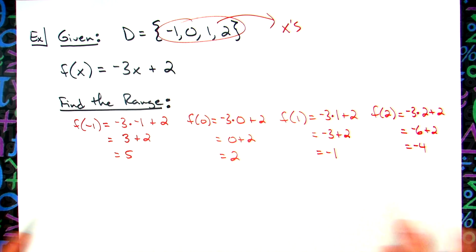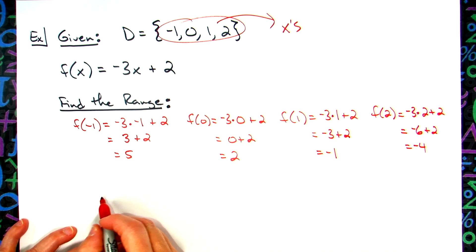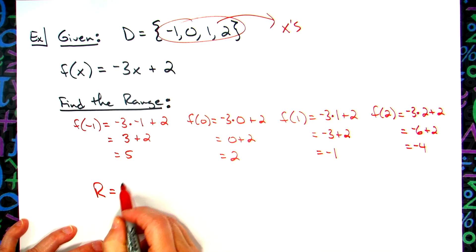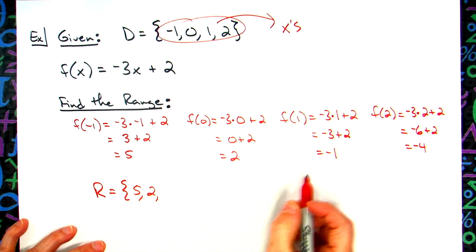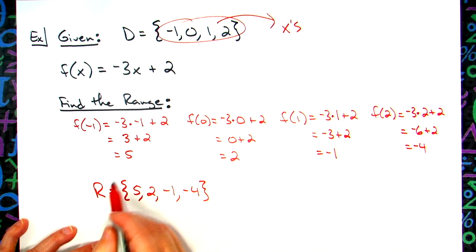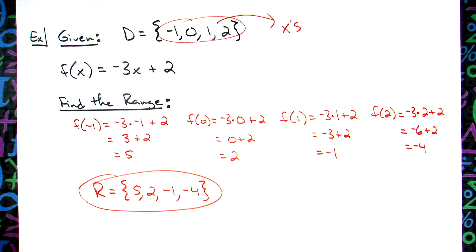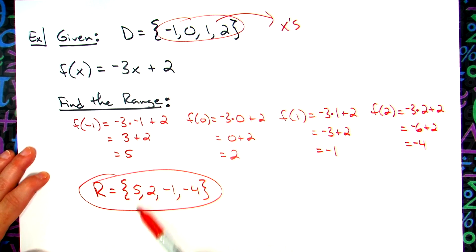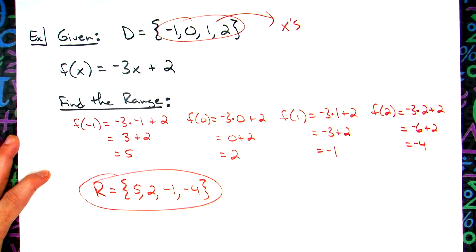Now, I can't just leave it written out like that because that's not very good. I found all my range numbers. My range is going to be the 5 that I calculated, the 2, the -1, and the -4. So that's my actual answer. They gave me 4 domain numbers, so I have 4 range numbers.